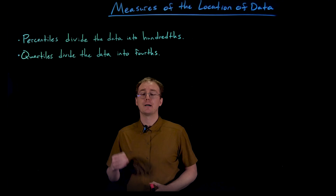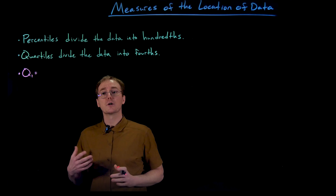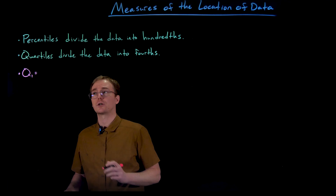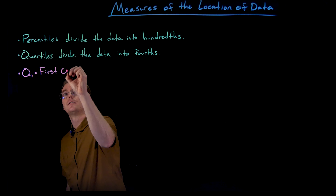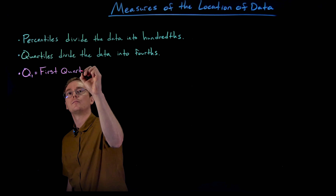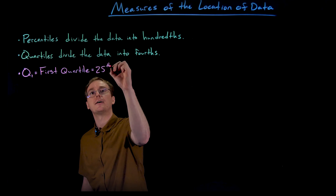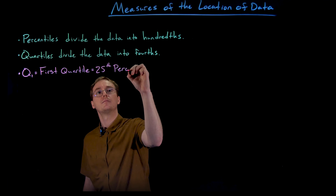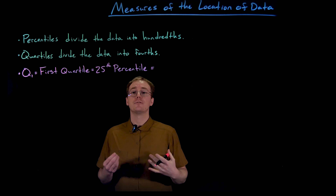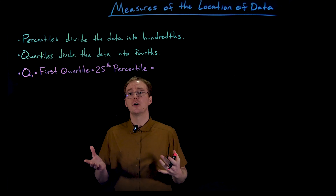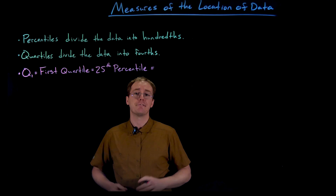Let's define the first, second, and third quartile. We denote the first quartile as Q sub one. The first quartile is equivalent to the 25th percentile. This is a data value from our data set, and what it represents is that 25% — or one quarter — of the other data in the set is going to be less than or equal to that value.